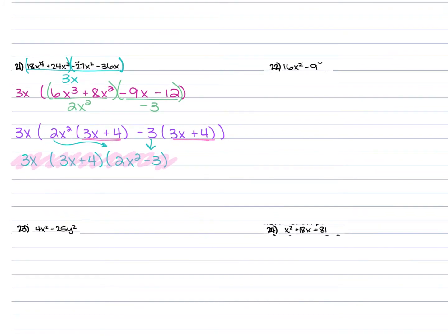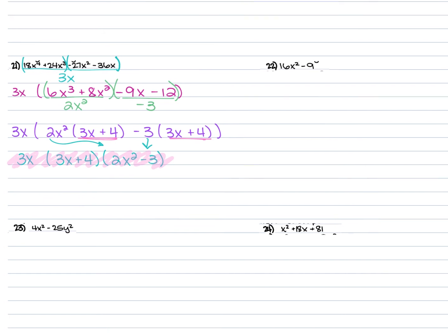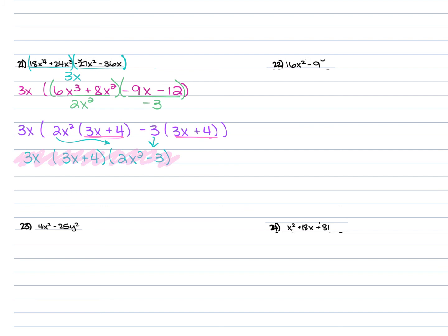For number 22, we have 16x² − 9. There's no GCF, but since it's a binomial separated by subtraction and you can take the square root of both terms, use the difference of squares. The square root of 16x² is 4x, and the square root of 9 is 3. Using a minus b times a plus b: final answer is (4x − 3)(4x + 3). These factors are interchangeable in order.